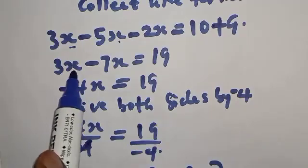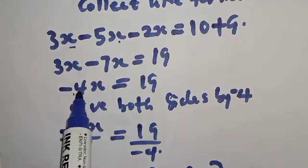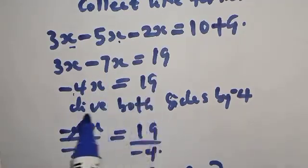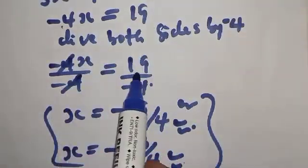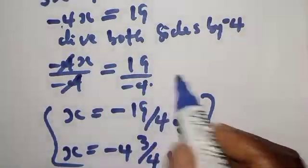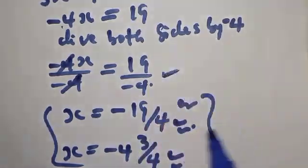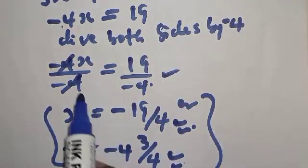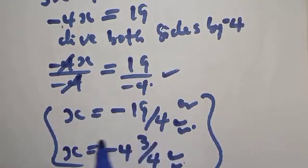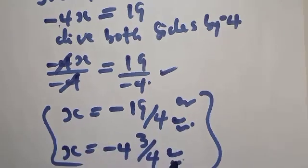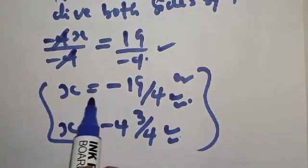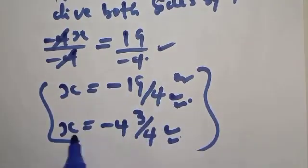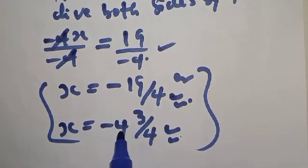So 3x minus 7x gives minus 4x equal to 19. Dividing both sides by minus 4, x is equal to minus 19 over 4. We can verify: minus 4 over minus 4 times 4 is 16, but the answer is still minus 19 over 4.